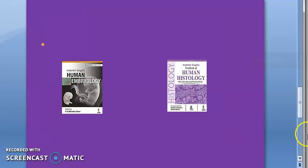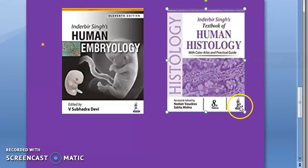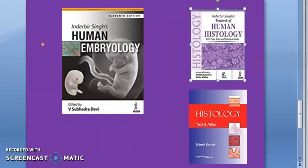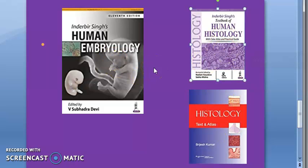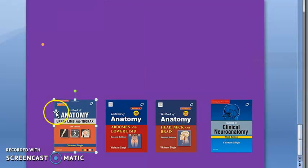For embryology, Inderbir Singh is a good book — the diagrams were so accurate that models in our college for practicals were made directly from them. For histology, there's Brijesh Kumar among others, but honestly I didn't use anything beyond Chaurasia. I think other than Chaurasia, you don't really need to buy any separate book for these topics.